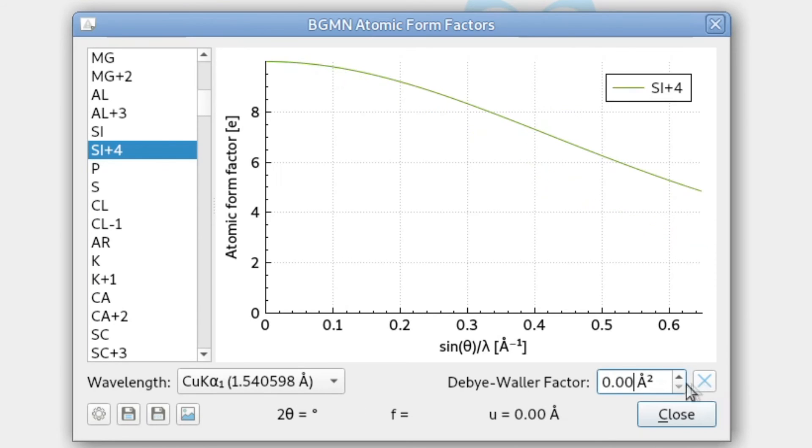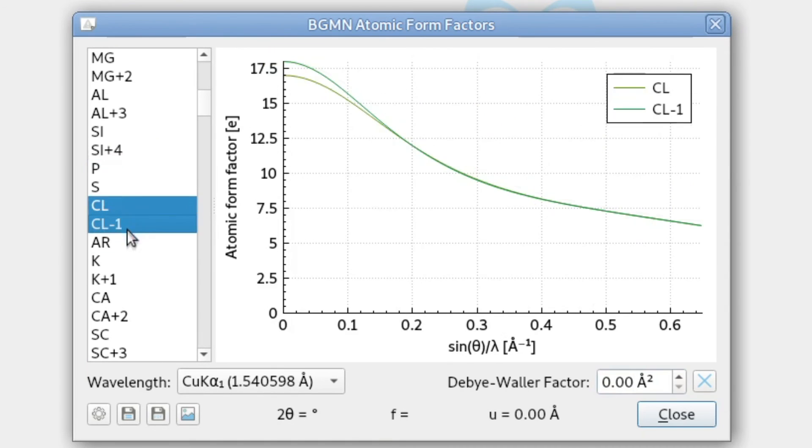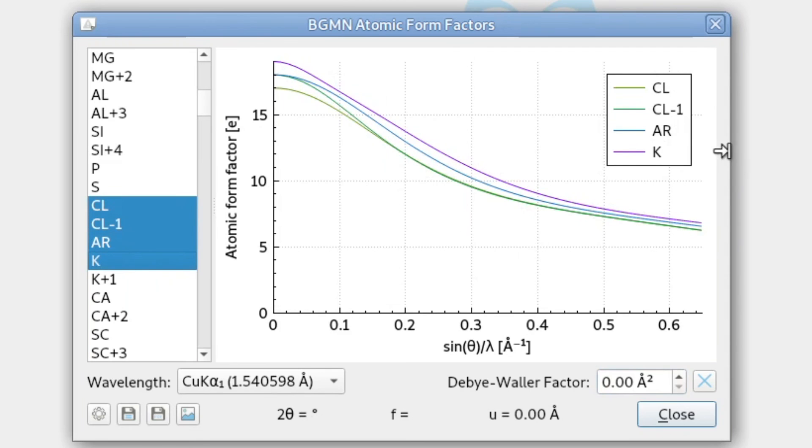And with this button we can reset the Debye-Waller factor back to zero. And down here we have a few export possibilities. Here we can export these curves as a CSV value, as a text file, and import it in other software if we want to use these graphs in some other sort of figures. And this button will export this graph as a PDF file, and this one as a pixel graph.